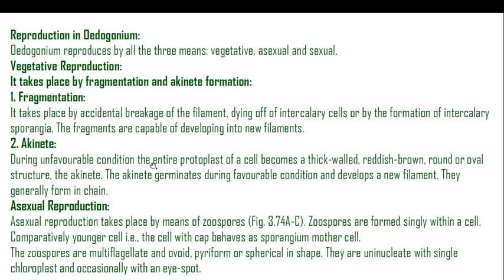During unfavorable conditions, the entire protoplast of a cell becomes a thick-walled, reddish-brown, round or oval structure called an akinete. When the thallus body does not get favorable conditions — nutrition or shelter — it develops into akinetes. These akinetes germinate when favorable conditions return and develop into a new filament. They are generally formed in a chain, forming a long elongated chain of reddish-brown round or oval structures.